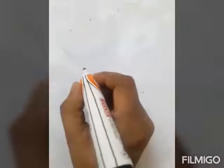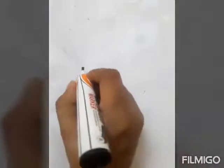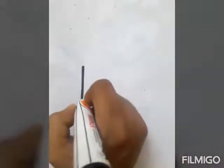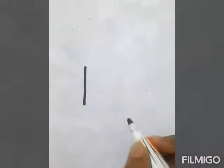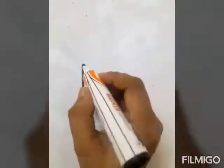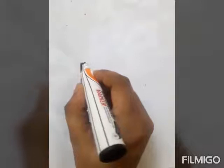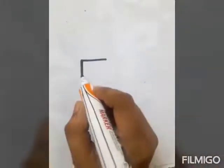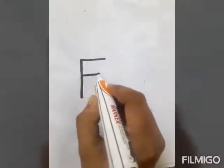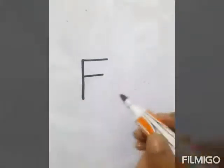Okay, it's writing time now. I am showing you how to write capital letter F. First you have to write a standing line, then two sleeping lines — one at the top and one in the middle. That gives you capital letter F.